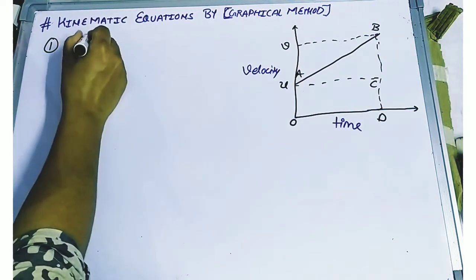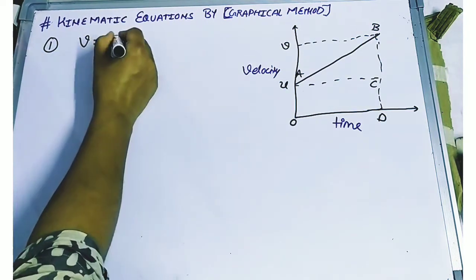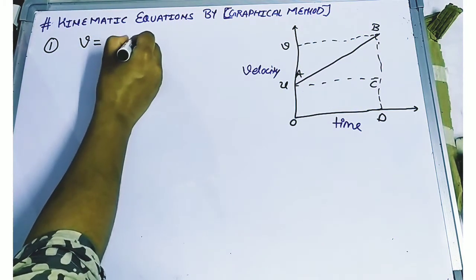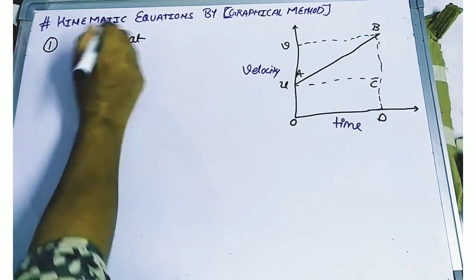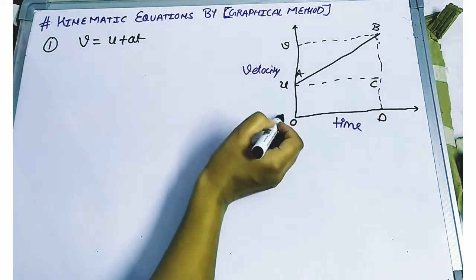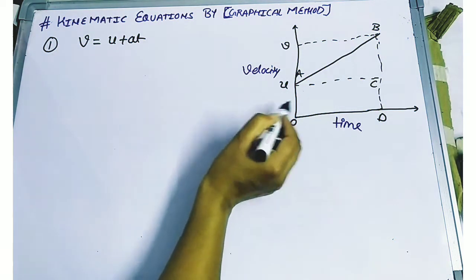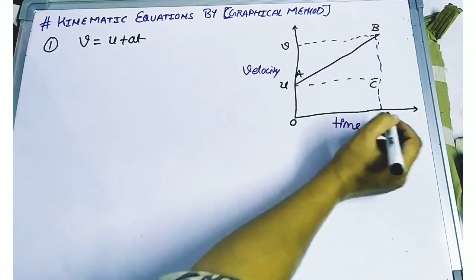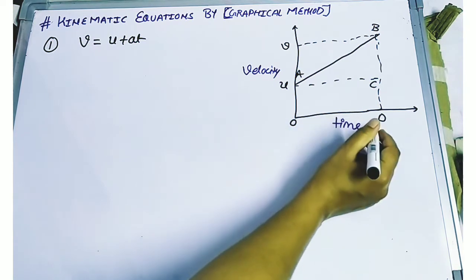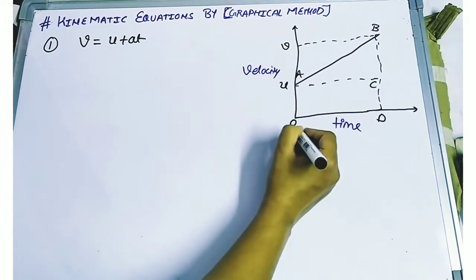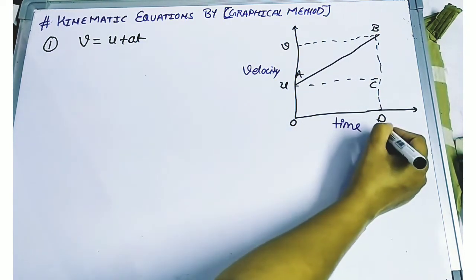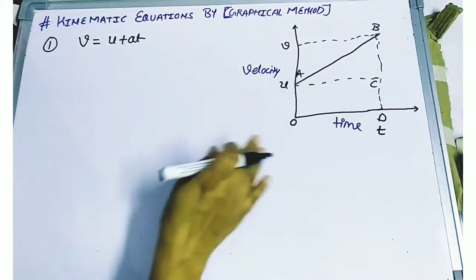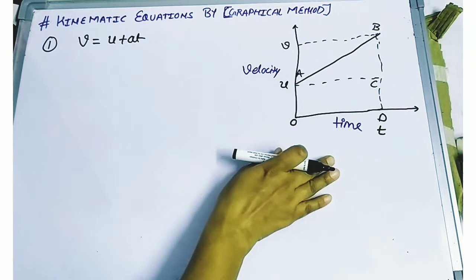Now we are going to discuss the first equation of motion. The first equation of motion says: v equals u plus at. Here if we see what is the value — this is my time, from 0 to t. The time will be from 0 to t.